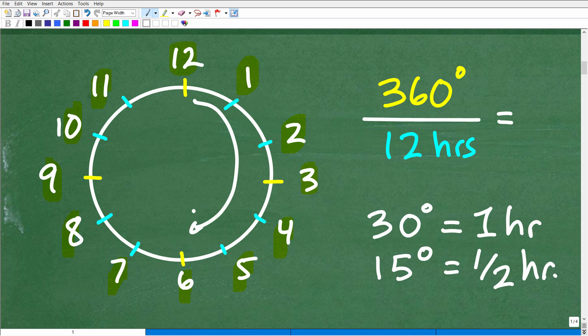And if you go halfway around a circle, it would be half of that. That would be 180 degrees. And if you go a quarter way around a circle, that would be a half of 180 or 90 degrees.